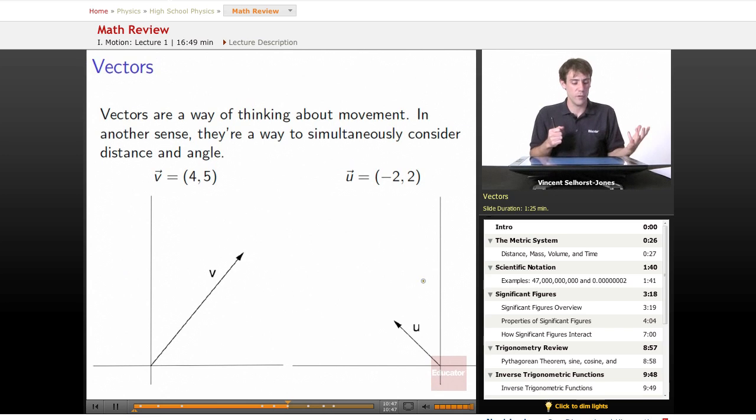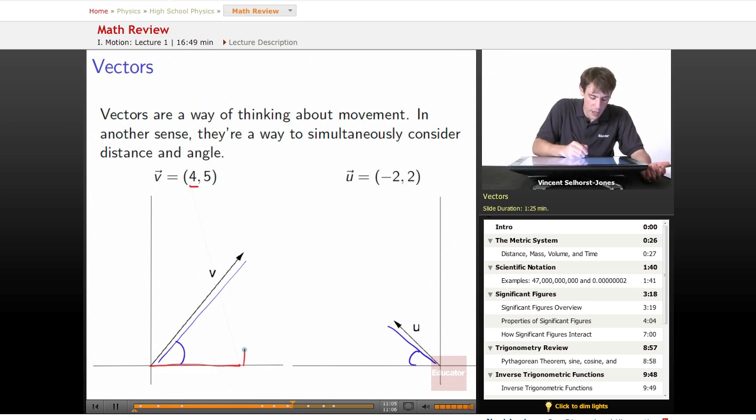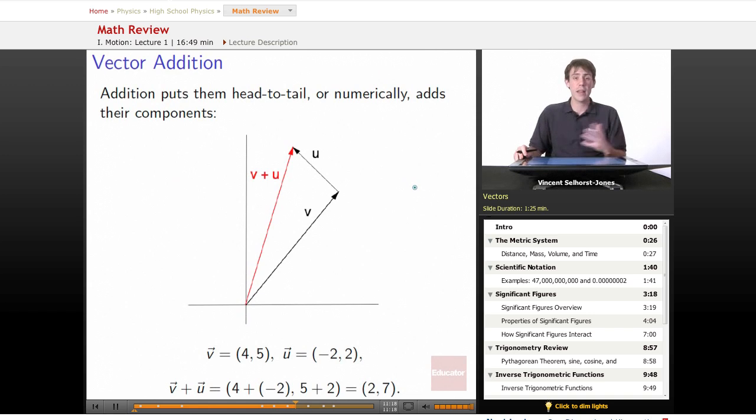Vectors are a way to think about movement. They're a way to simultaneously consider distance and angle. v has gone some distance at some angle; u has gone some distance at some angle. Alternately, we could think of v as going right by 4 and up by 5. u went left (negative 2) and up by 2. That's the idea of a vector. We can have vector addition. If you have two vectors, you can add them by putting them head to tail. Numerically, you add their components. v + u is the sum of the numbers: 4 + (−2) = 2, and 5 + 2 = 7. So (4,5) + (−2,2) = (2,7). Simple as that.